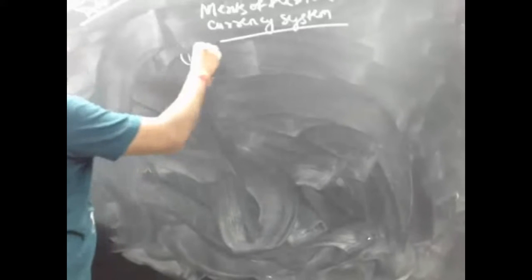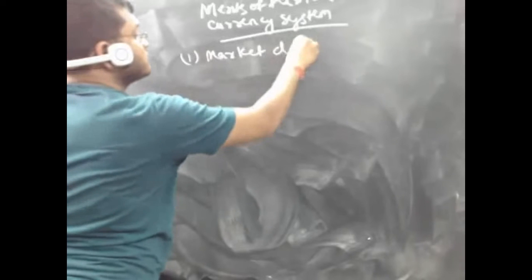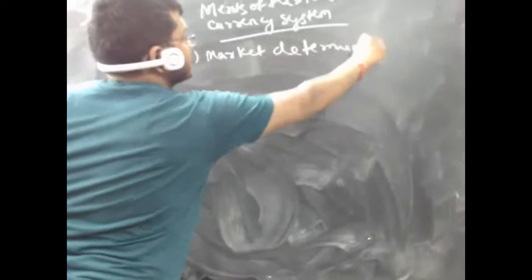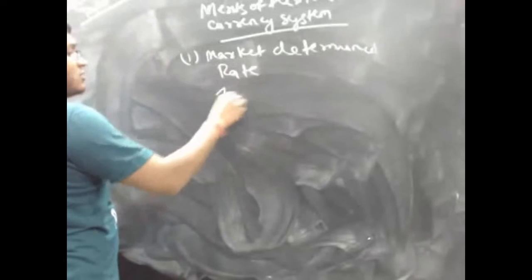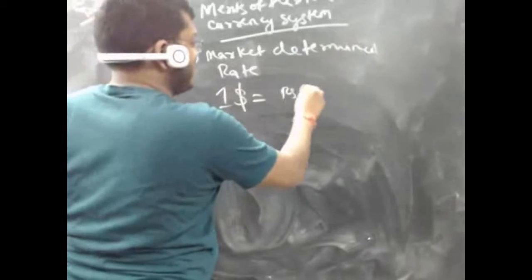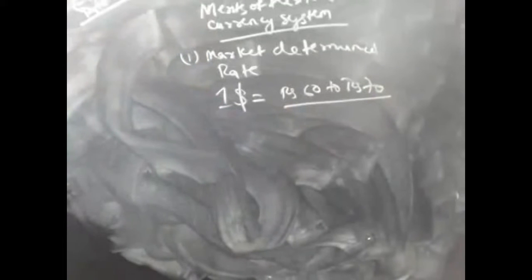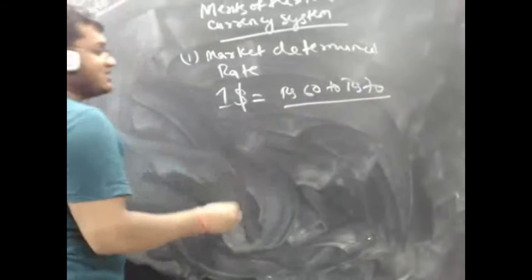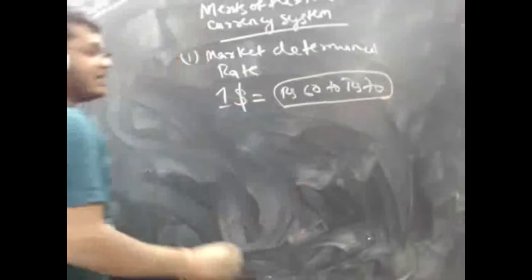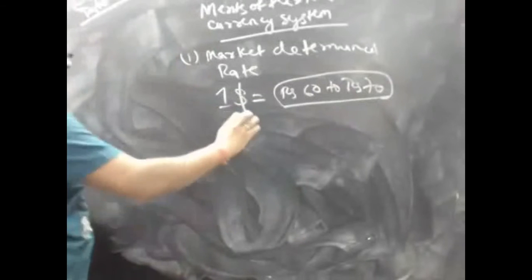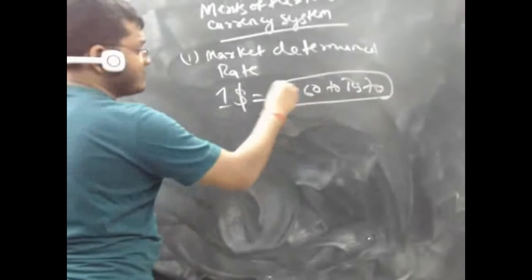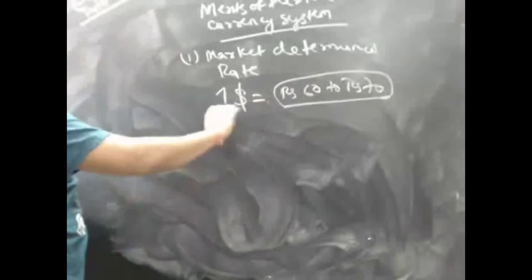Some of the demerits in the fixed currency system will become merits here, and some of the merits of fixed will become demerits here. The first one is market-determined rate. When RBI or the central bank fixes your currency — say one dollar equals rupees 60 to rupees 70 — this is not an unreasonable range, because they fix it based on certain market factor calculations. Only in uneven circumstances will your price fall below 60 or go above 70; otherwise it usually remains in this range.